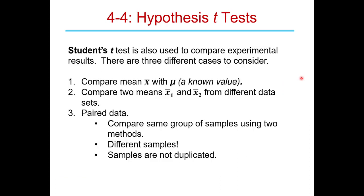Now we're moving on to Section 4-4: t-tests, sometimes called hypothesis tests or significance tests. Student's t-tests are used to compare experimental results, and there are three different cases we'll consider. Harris calls them Case 1, Case 2, and Case 3 t-tests — though that notation isn't widely used elsewhere, the underlying t-test concepts are standard.